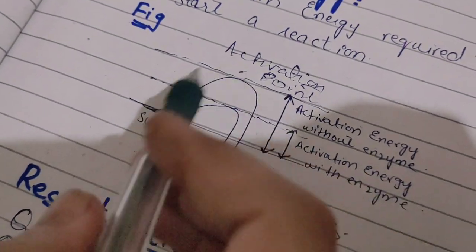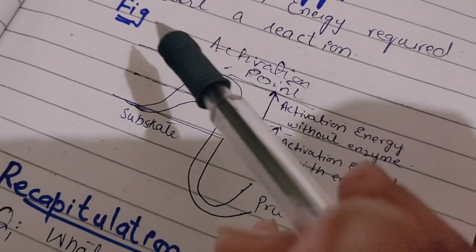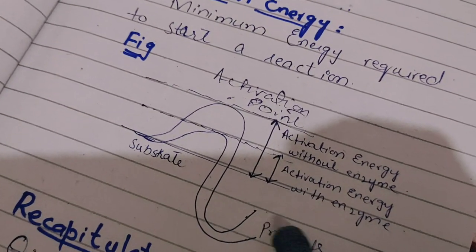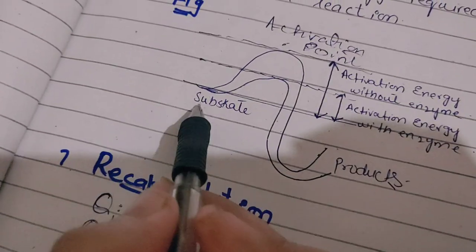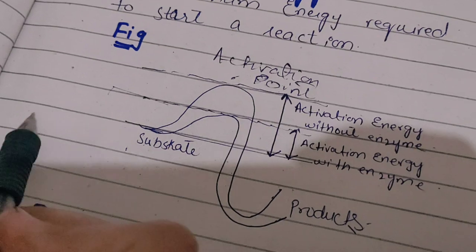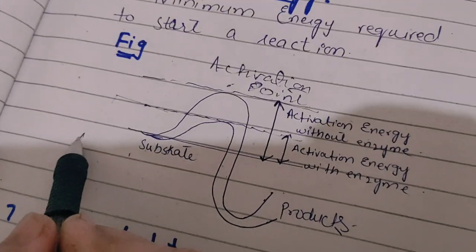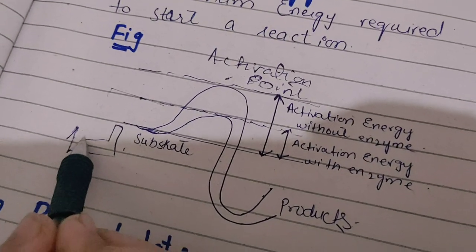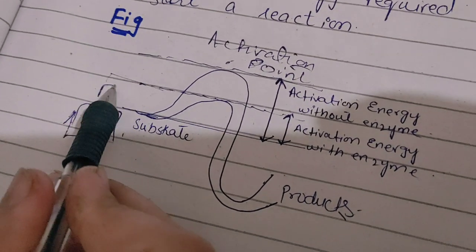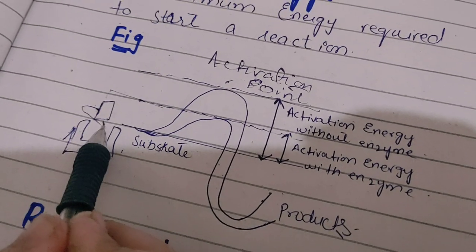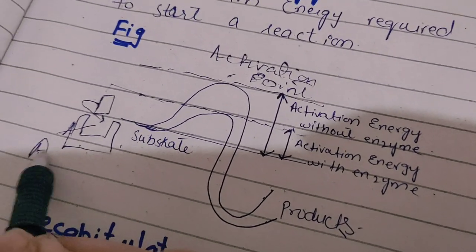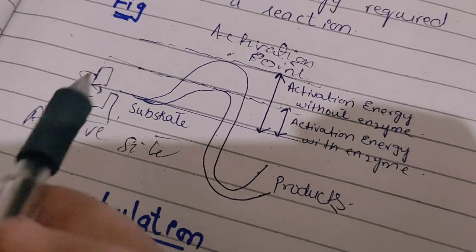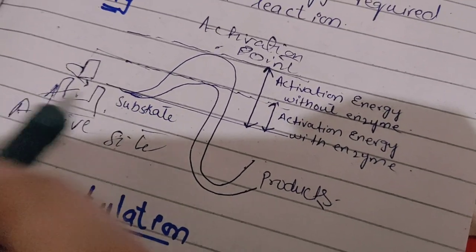The activation point is necessary because without it, the activation energy cannot break down the substrate into the product. The enzyme has a protein structure with an active site. The active site is the place where the substrate attaches and is converted into the product.